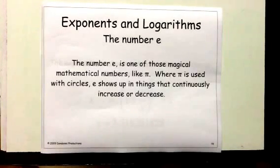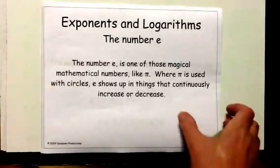It's one of those very interesting mathematical numbers like pi. Pi is used when we talk about circles—it's the ratio of the diameter to the circumference of a circle. But e shows up in things that continuously increase or decrease.